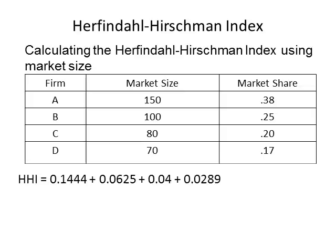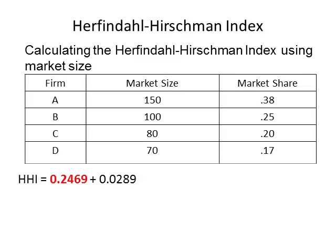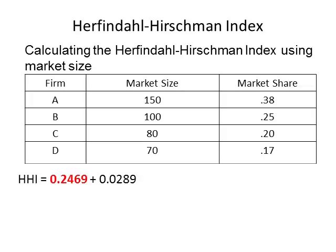Next, let's add the squares of each firm's market share together. Adding 0.1444 and 0.0625 gives 0.2069. Adding 0.2069 and 0.04 gives 0.2469. Then adding 0.2469 and 0.0289 gives 0.2758.